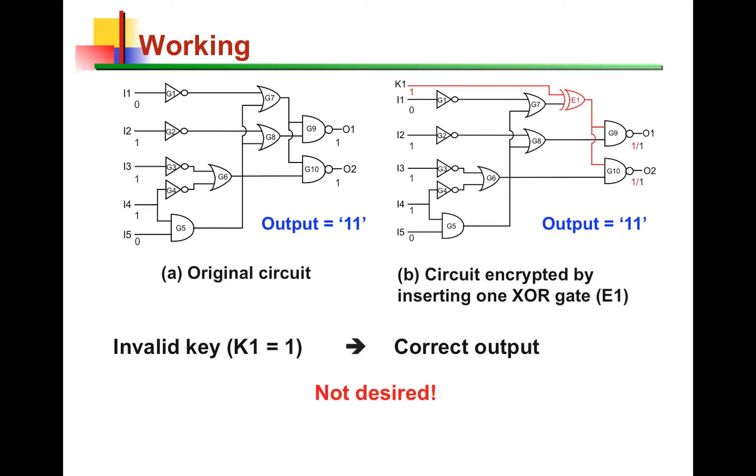What we don't want is when we apply an incorrect key, and yet we get the correct outputs. This is not desirable, because logic locking in this particular case for that input pattern is not providing any protection whatsoever. Why did this happen in this particular case? Well, it's because the two gates controlling the outputs are both receiving the controlling values of the gates, and as a result, the effect of the incorrect key is blocked right there at that level. It's not able to make it to the outputs.